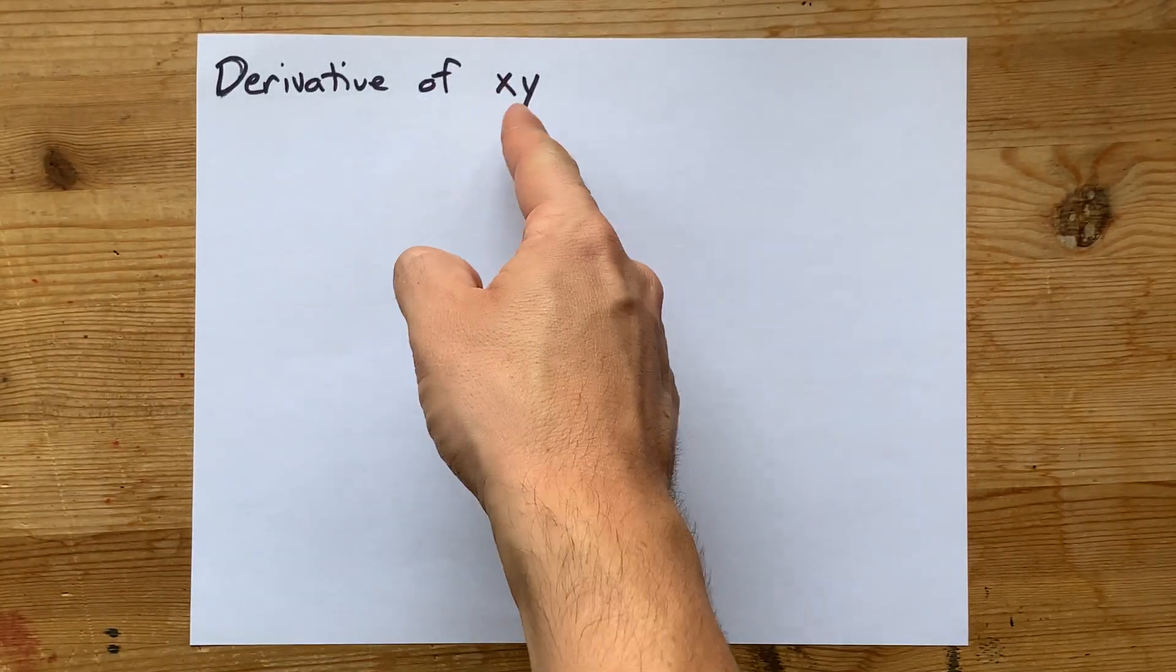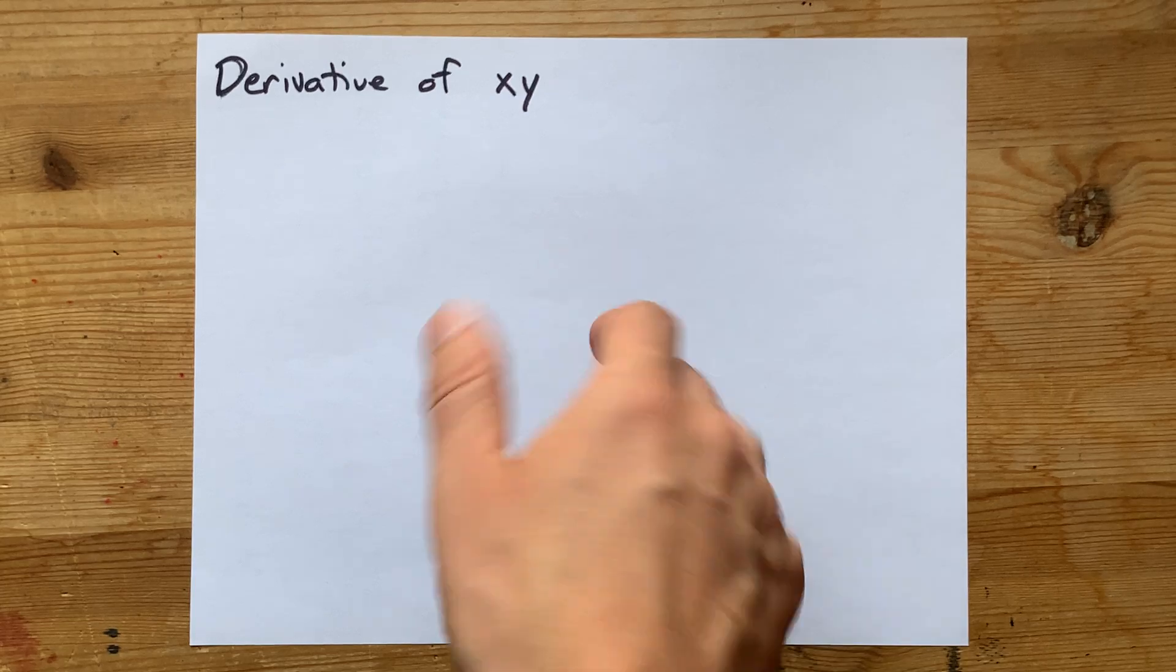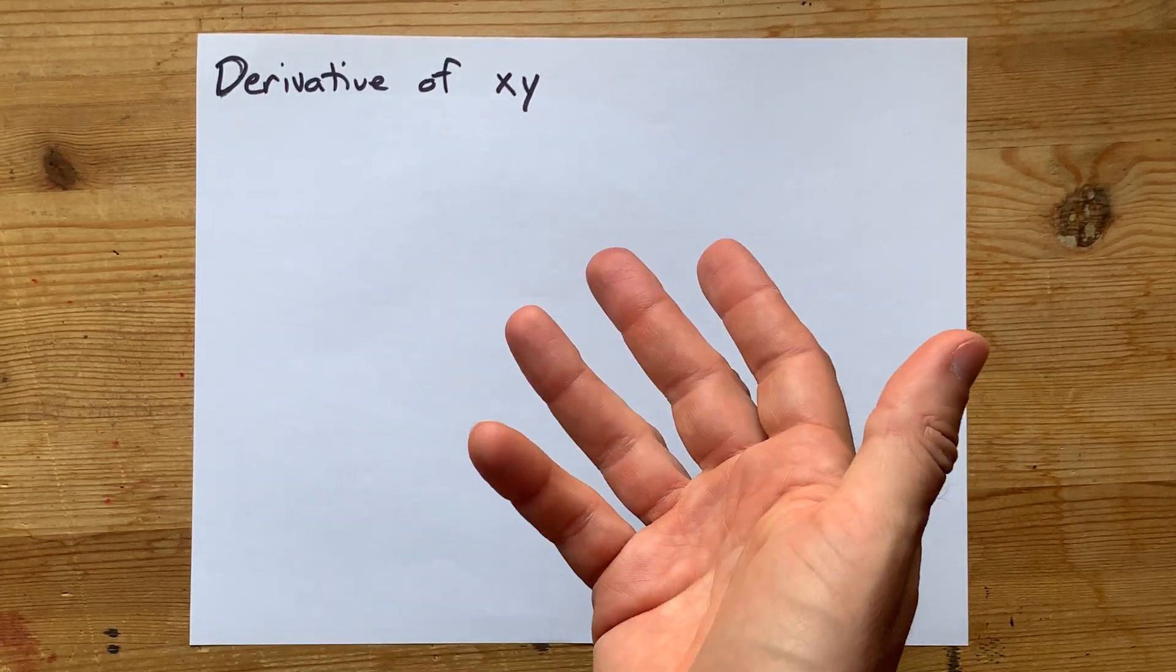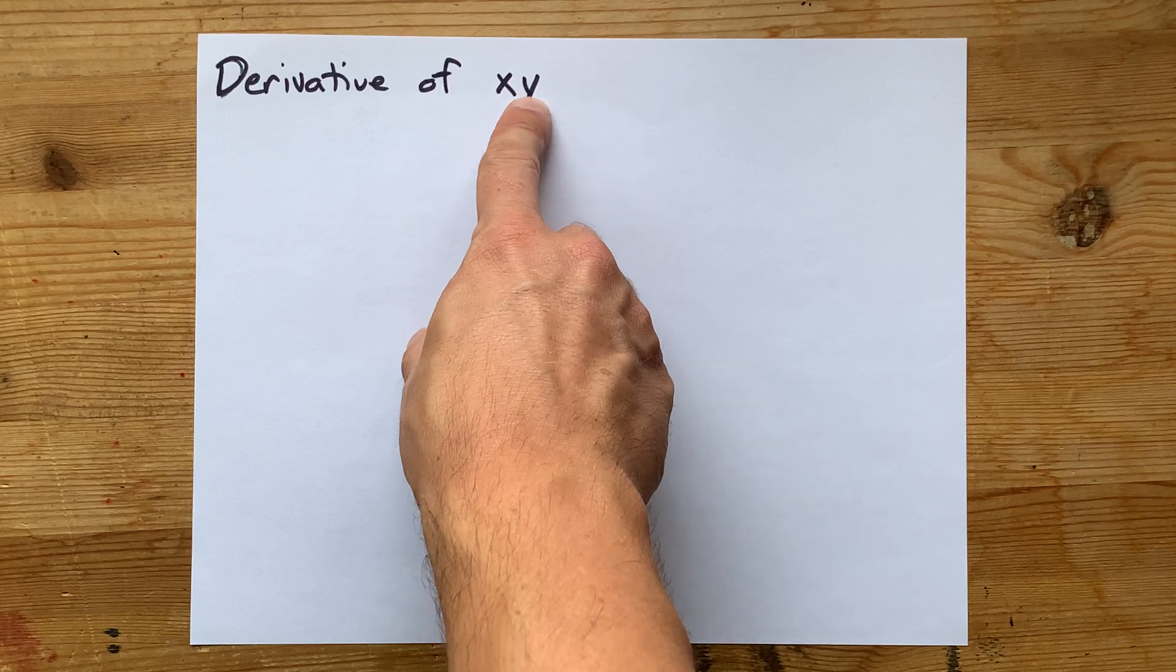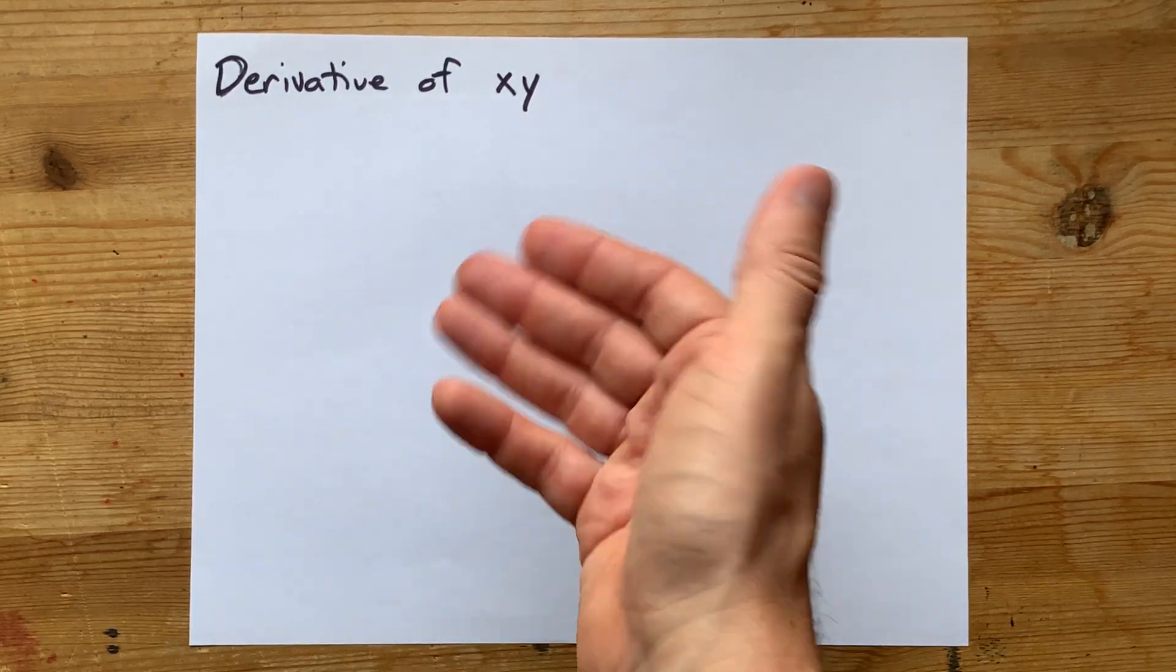What is the derivative of x times y? Well, the problem is that x is the variable we're going to differentiate with respect to, and y is presumably a function of x.